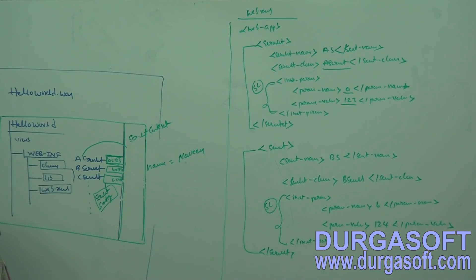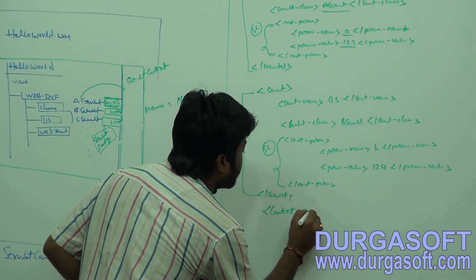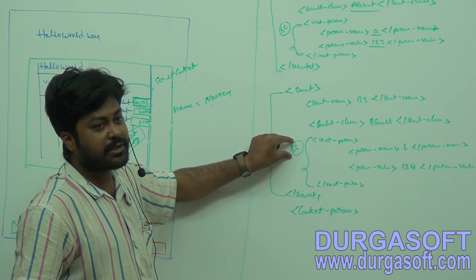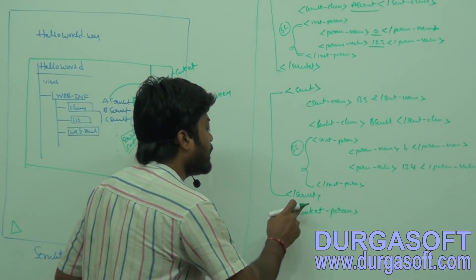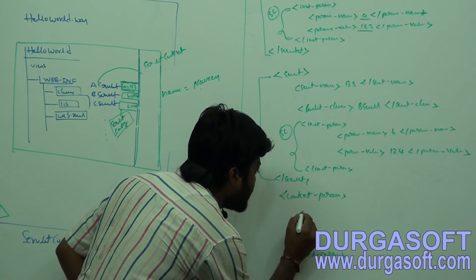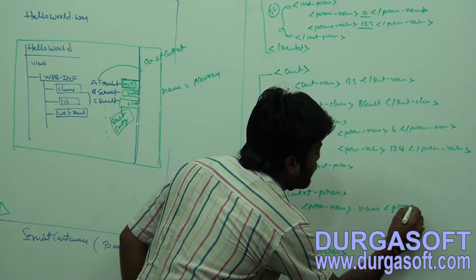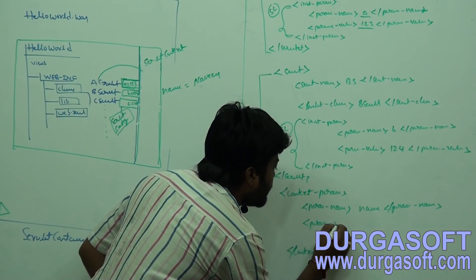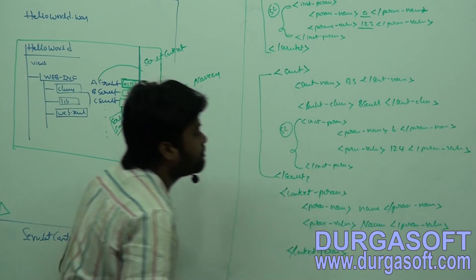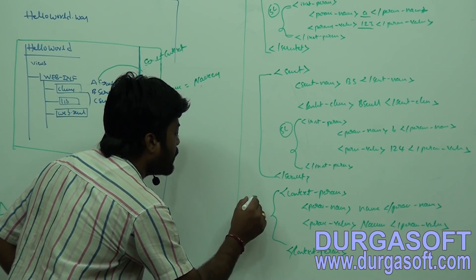And if you want to put any data into the context — meaning make the data public and available to all the servlets — instead of putting it under init-param, there is one more tag: context-param. This context-param you should write outside the servlet tag, not inside it. Inside the servlet tag means it goes into ServletConfig. If you write it outside the servlet, it must be context-param. Between context-param tags: param-name 'name', param-value, and so on. This data will be stored under the ServletContext object.